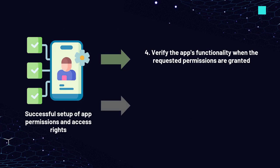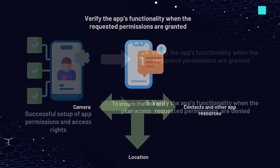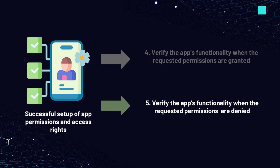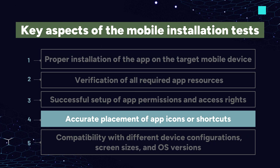After the application is installed, verify the app's functionality when the requested permissions are granted. The goal is to ensure that the app can access and use the requested resources — e.g., camera, location, contacts — without issues. Then verify that when specific permissions are denied, the app provides an alternative user experience or clearly communicates why certain features may not work without the requested permissions. We will prepare a real-world example of this aspect of mobile testing in this video.